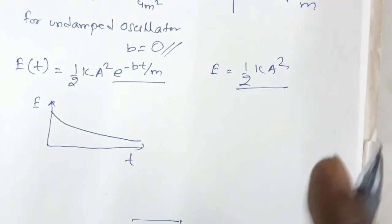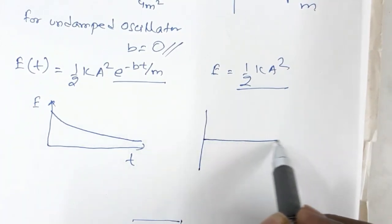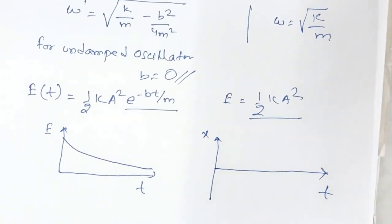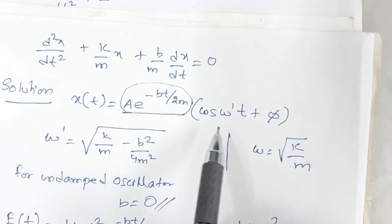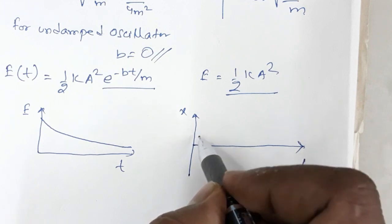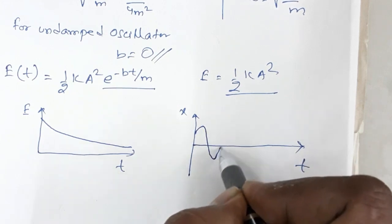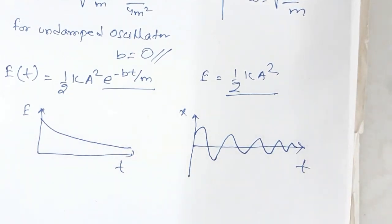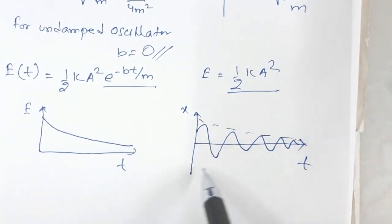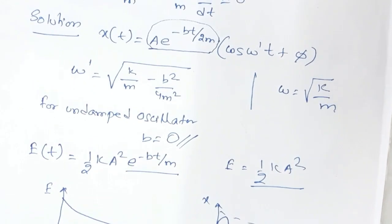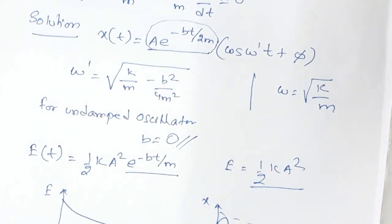If you draw the position versus time graph for the solution x(t), the displacement gradually decreases — it is a sinusoidal curve with a decaying envelope. So we have the x–t graph showing gradually decreasing oscillation and the E–t graph showing exponential decay. This is the concept of damped simple harmonic motion or damped oscillation.